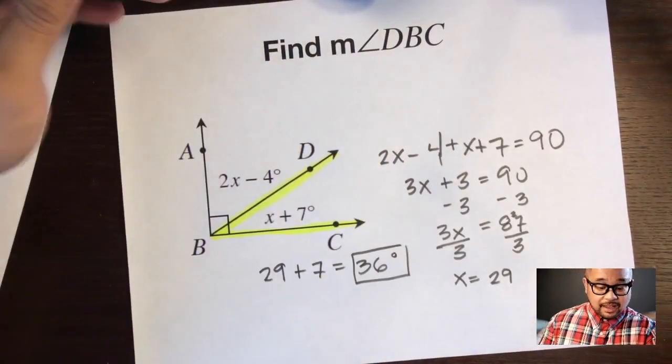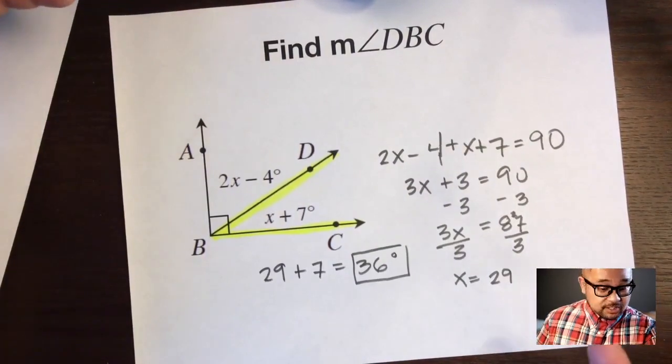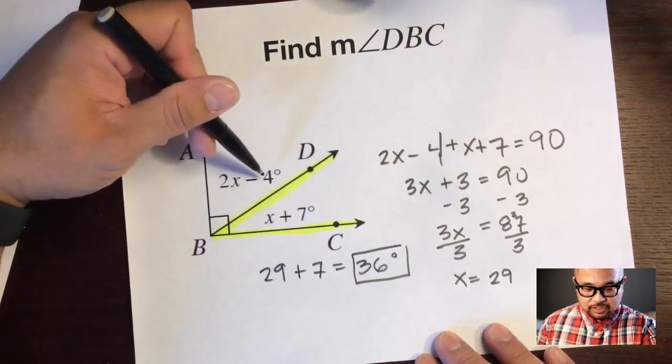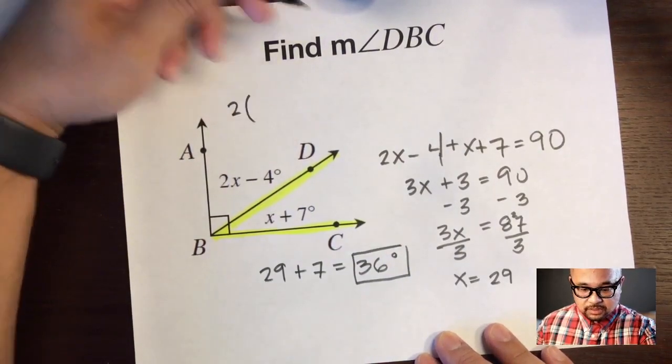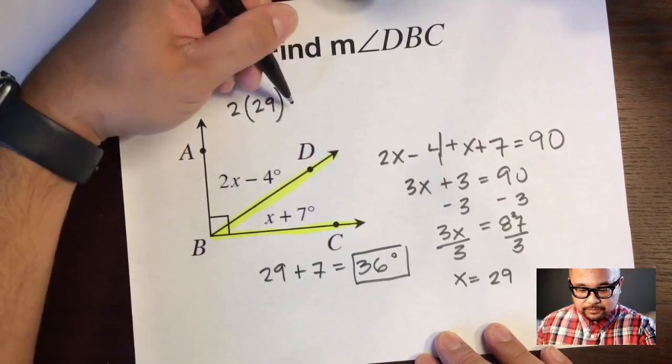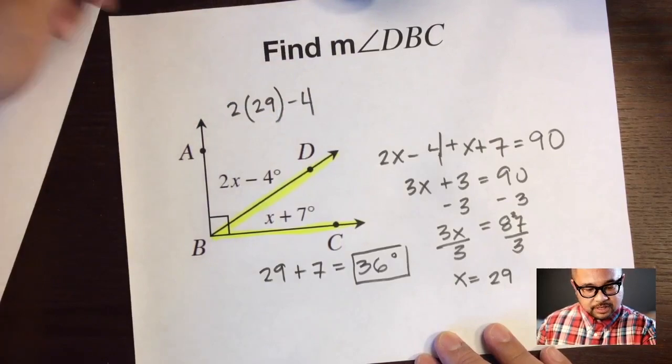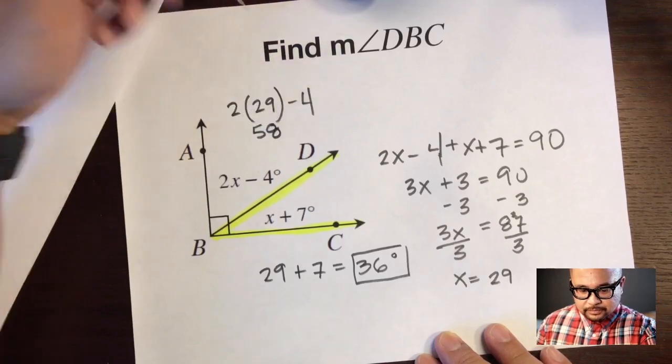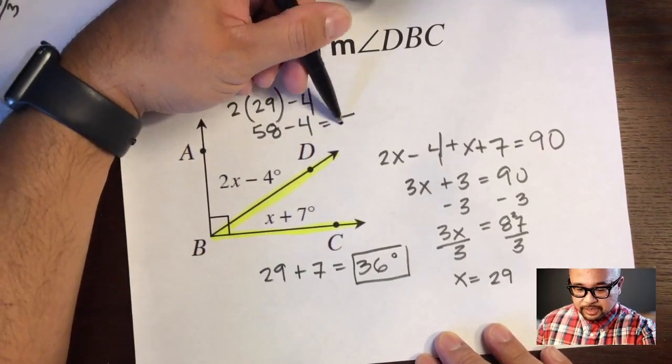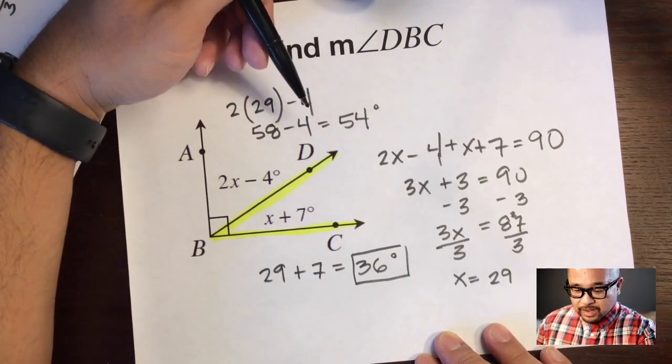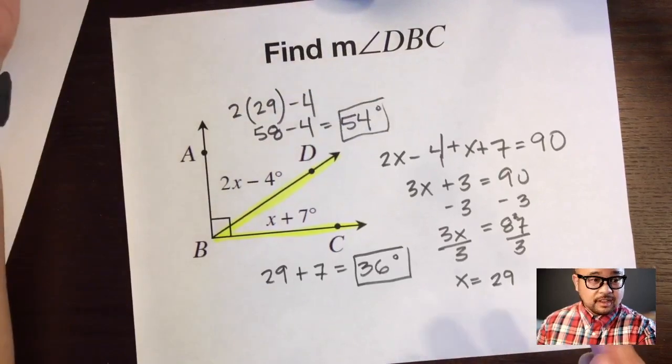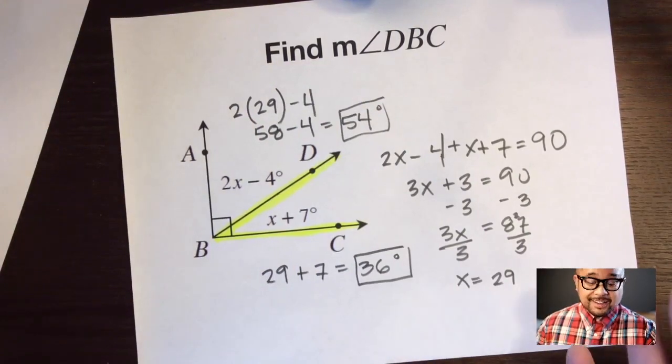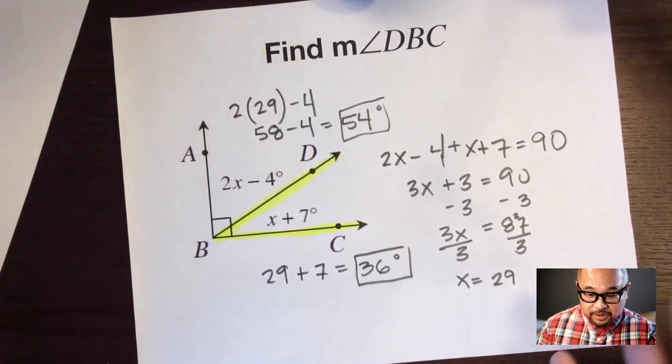And if you want to make sure that that's the correct answer, just for fun, let's check. Let's actually plug in x back into angle ABD, which is 2x minus 4. So let's go 2 times 29 minus 4 and see what that gives us. 2 times 29 is 58, and we'll bring down the 4, and 58 minus 4 is 54 degrees.